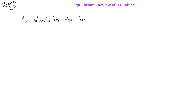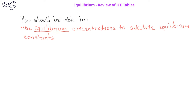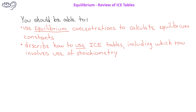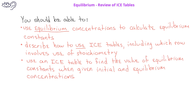By now, you should be able to use equilibrium concentrations to calculate equilibrium constants. You should be able to describe how to use an ICE table, including identifying which row involves stoichiometry. You should also be able to use an ICE table to find the value of an equilibrium constant if given a few initial and equilibrium concentrations.